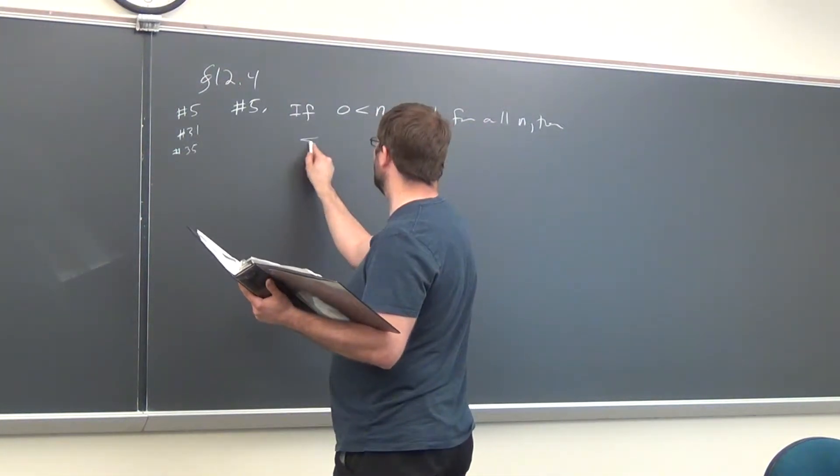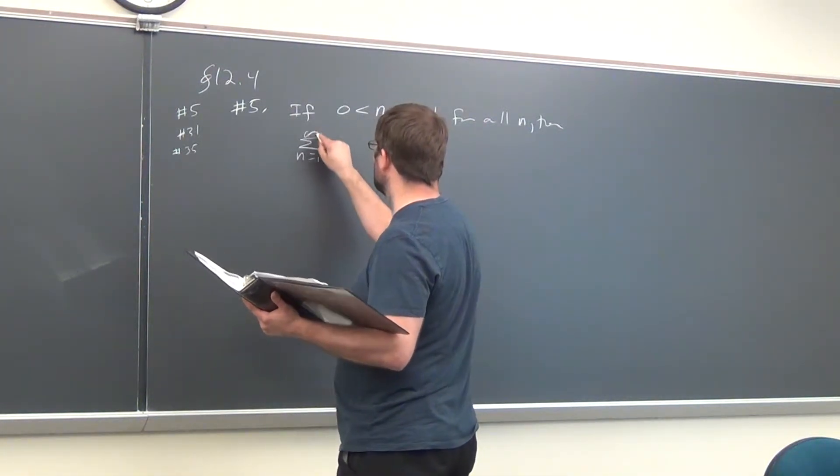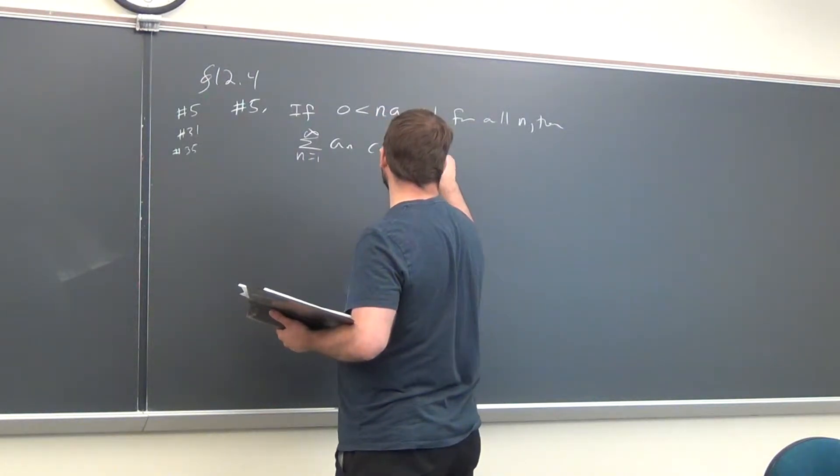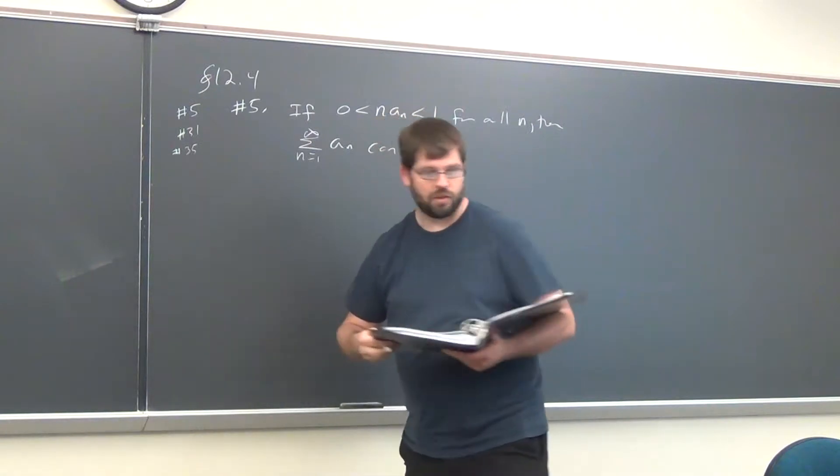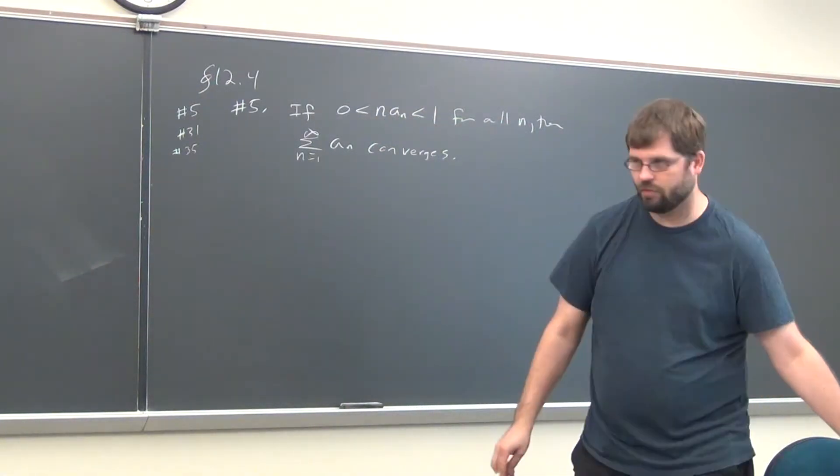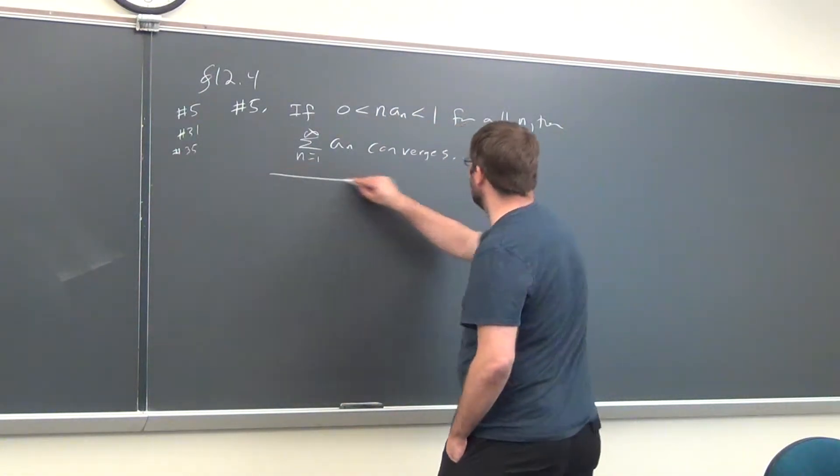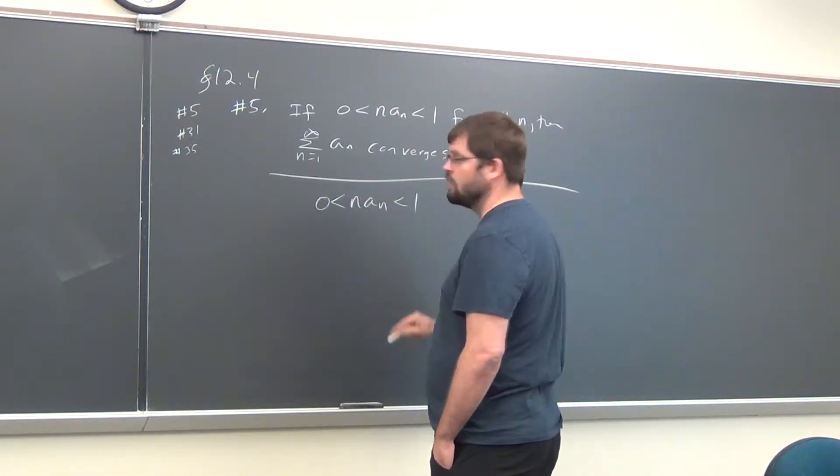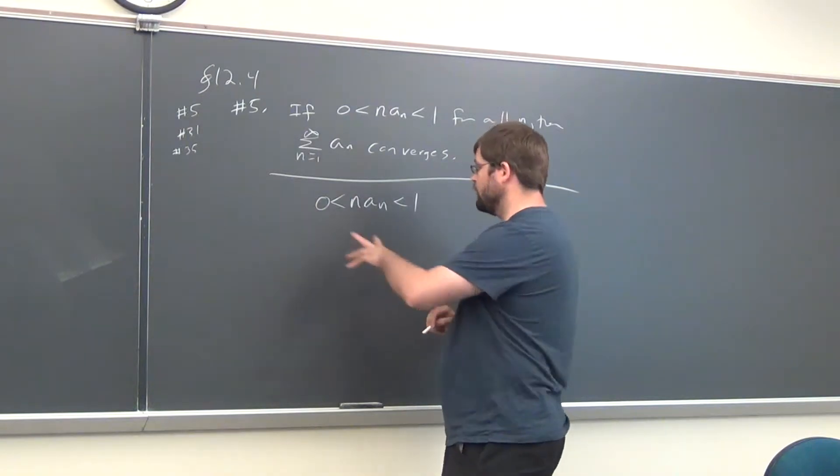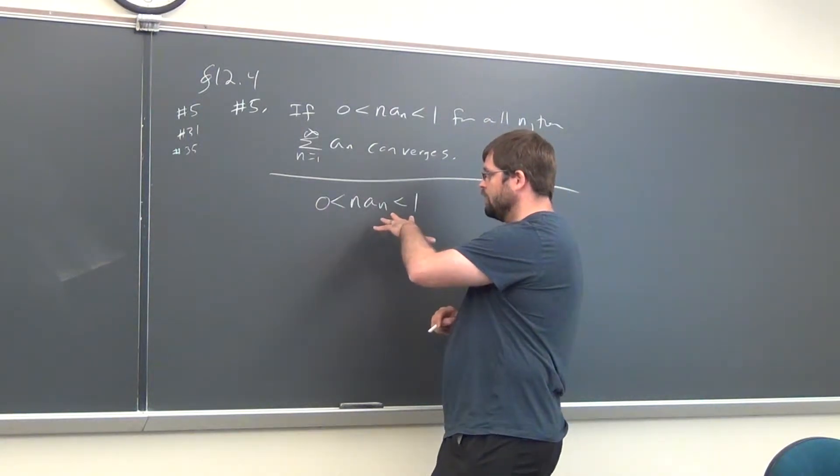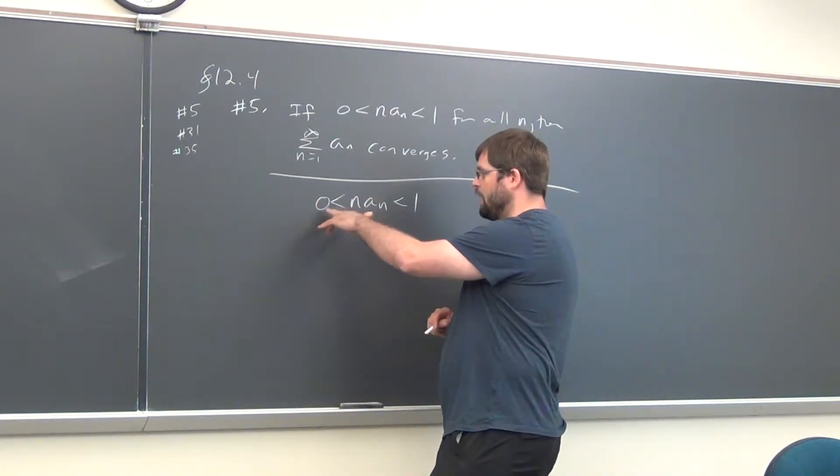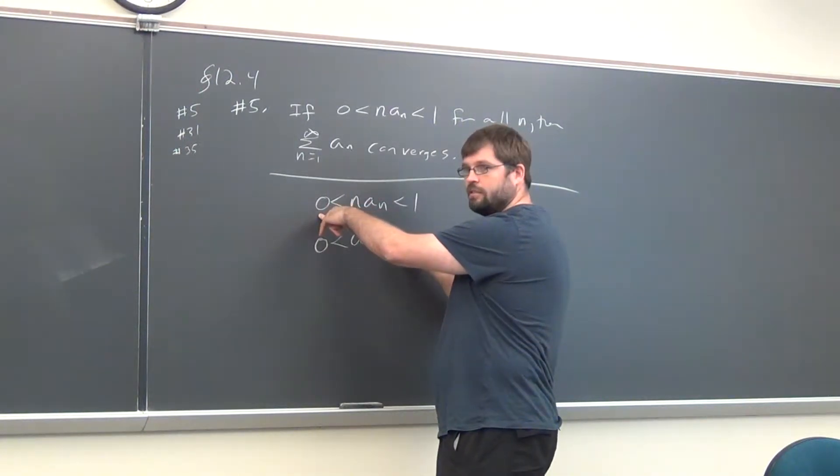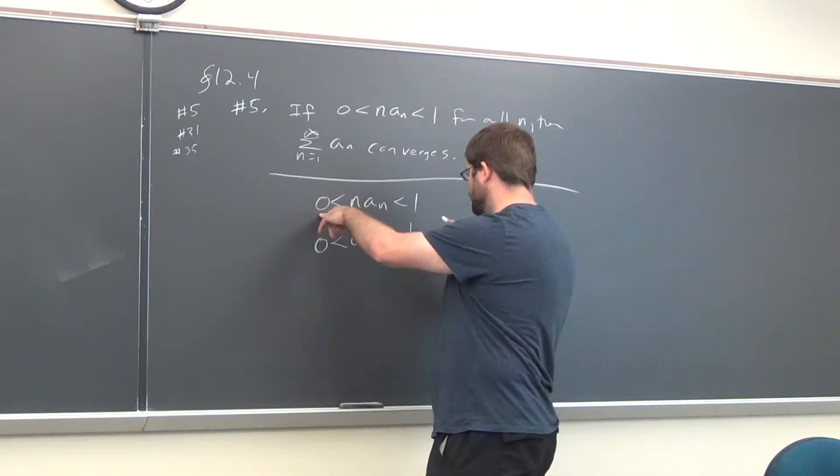Then the sum of a_n converges. Let me just state this in another way. This chain of inequalities here, if you divide by n - everything's positive here - you get 0 less than a_n less than 1 over n.